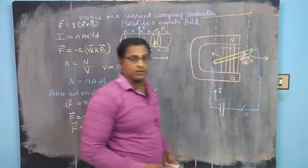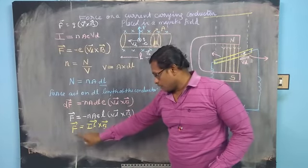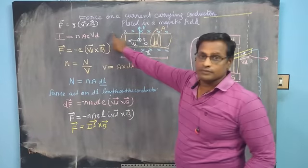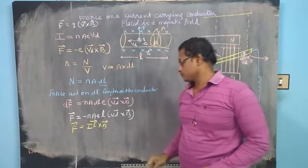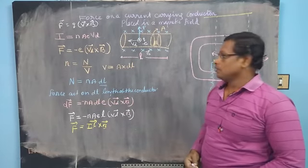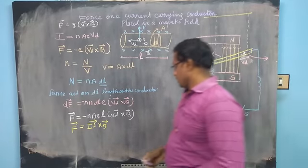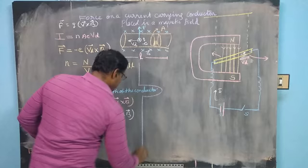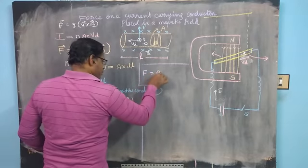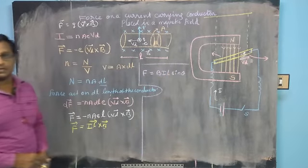So the vector form of the force acting on the entire conductor is F = IL × B. Now coming to the magnitude part — when is the force maximum? In magnitude form, F = BIL sinθ. The force is maximum when θ = 90°.